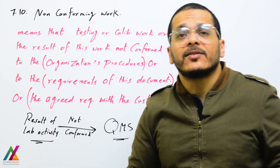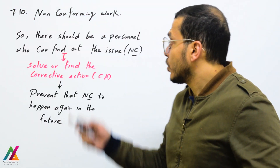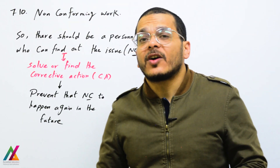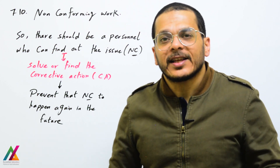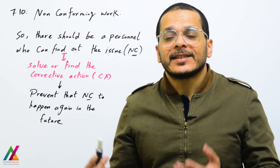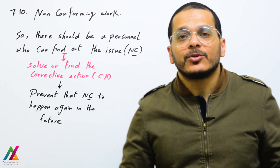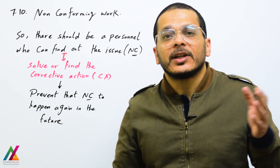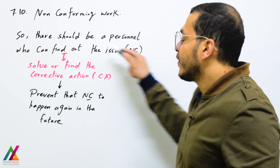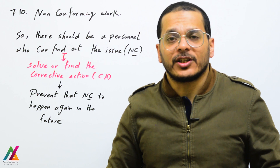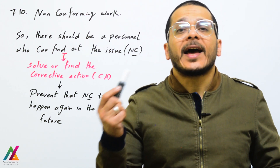When a result of lab activity is not conformed to the quality management system, there should be a person who can find out the issue — the non-conforming work. That can be the analyst of the unit, the technical lead of the unit, or the quality lead of the lab during internal audit, or even the accreditation body during an external audit.